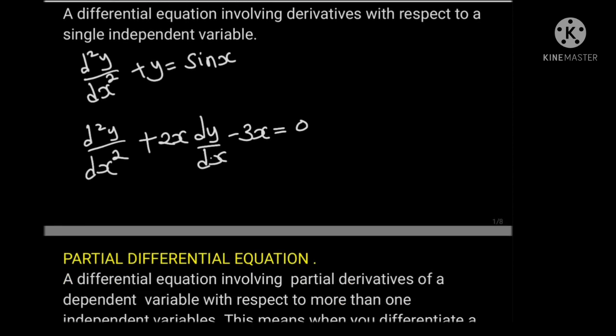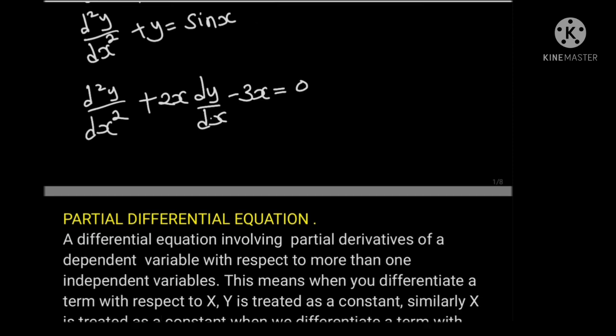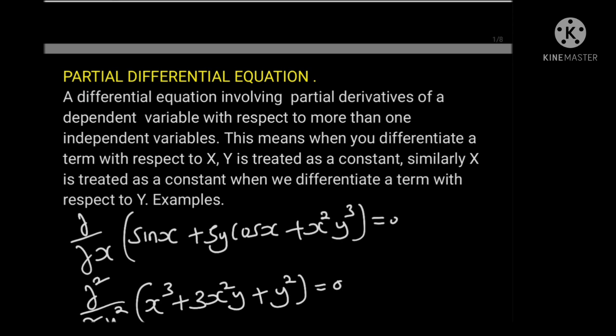Another example: d squared y over dx squared plus 2x dy over dx minus 3x equals to 0. Now let us define partial differential equation. A partial differential equation is a differential equation involving partial derivatives of a dependent variable with respect to more than one independent variable.